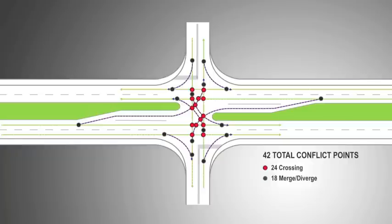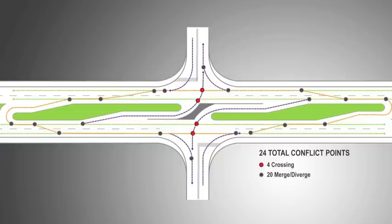I would not be afraid to construct another intersection like this. Reduced conflict intersections are safer because they reduce conflict points — a conflict point is where two vehicles cross paths. A standard four-lane divided intersection has 24 crossing conflict points, which pose the greatest safety risk. A reduced conflict intersection reduces crossing conflict points to just four.